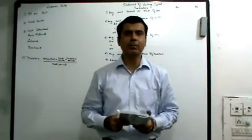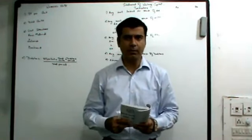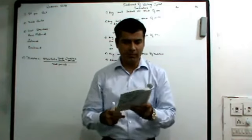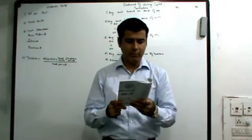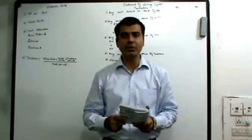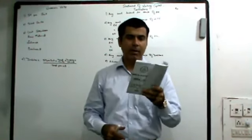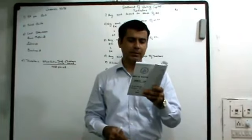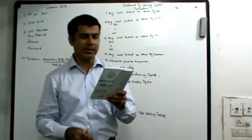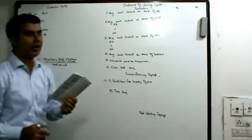Okay, now let's do the next sum of working capital. We already have done one sum. Let's try the next sum of working capital. This is sum number 2 on page 285. Let's read the summary. A company has a level of activity of 36,000 units per annum.